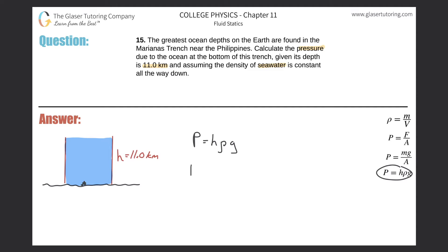So the pressure is simply going to be the height. It told us 11 kilometers, but remember we need it in terms of meters, so this is just 11,000 meters multiplied by the density of seawater.